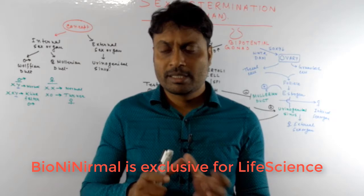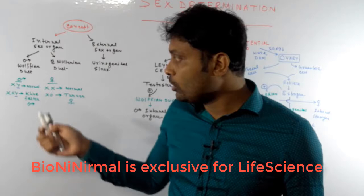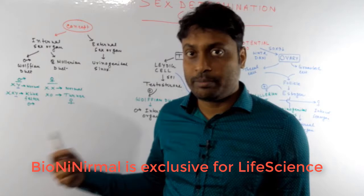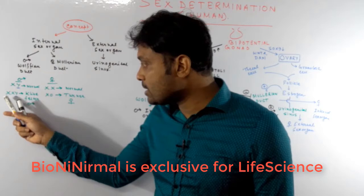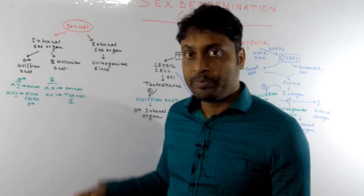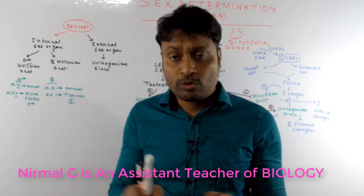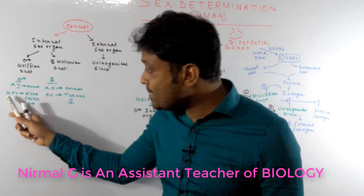Before going into a discussion about sex determination, we should have a few basic concepts. In males, there are two sex chromosomes: one X and one Y. In females, two X chromosomes are present. The presence of the Y chromosome determines maleness and the absence of the Y chromosome determines femaleness.